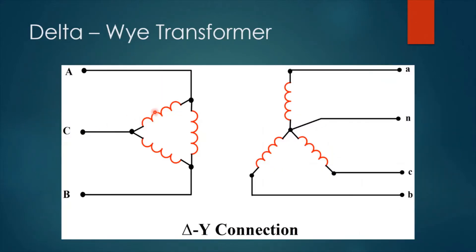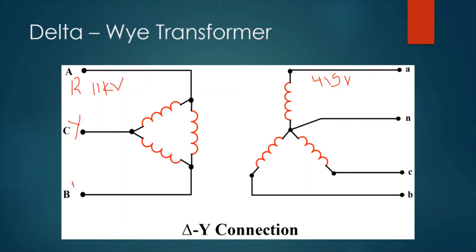The delta-Y transformer is connected with the primary side in a delta shape and the secondary side in a Y shape, which is exactly what we need for a distribution system. For example, assuming this is an 11 kilovolt to 415 volt transformer, the primary side will be 11 kilovolts and the secondary side is 415 volts. The primary side is connected to the medium voltage cable, which has three phase cores: R, Y, and B.